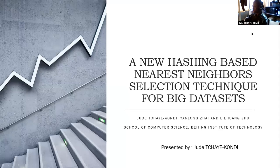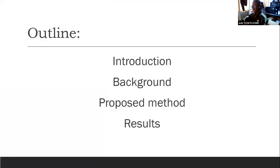My name is Jude, and I'm presenting a new hashing-based nearest neighbor selection technique for big datasets. This is my outline: firstly, I'll talk about k-nearest neighbor and the problem with k-nearest neighbor, and after I will introduce some background works on CNN, and after I'll show the proposed method and the result of our experiment.